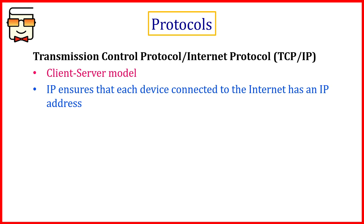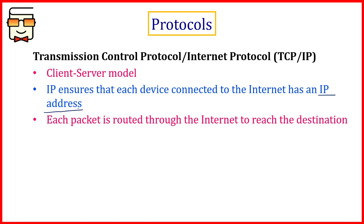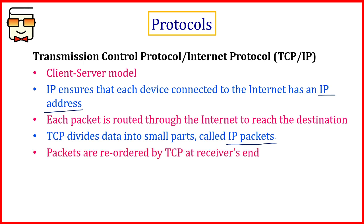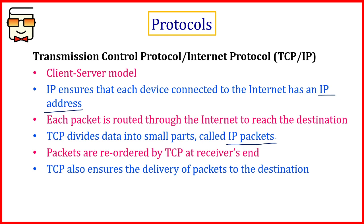IP — Internet Protocol — ensures that every device on the internet is associated with an internet address, known as an IP address. IP mainly helps in the actual routing of messages, deciding how the message travels through the sequence of links and gets delivered. TCP takes care of how data is broken down into smaller parts called IP packets and how the data will be reassembled at the receiver's end. The entire message is broken into IP packets which are then sent independently through the network.